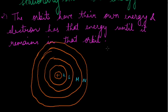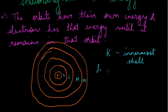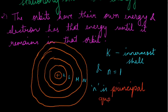Now the K is the innermost shell and it is also represented by n that is equal to 1. One means the innermost shell. So K is representing the shell number 1. Here n is the principal quantum number. N is the principal quantum number. It shows the number of shell in which an electron is staying.